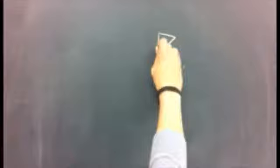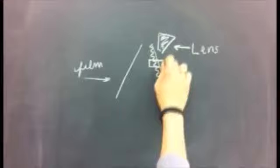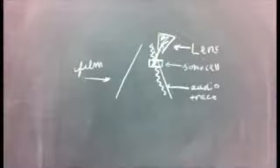In order to understand the change in sound requirement, I'll first explain how a solar cell works. A solar cell reads the change in light, so a lens focuses light through the audio track onto the solar cell.